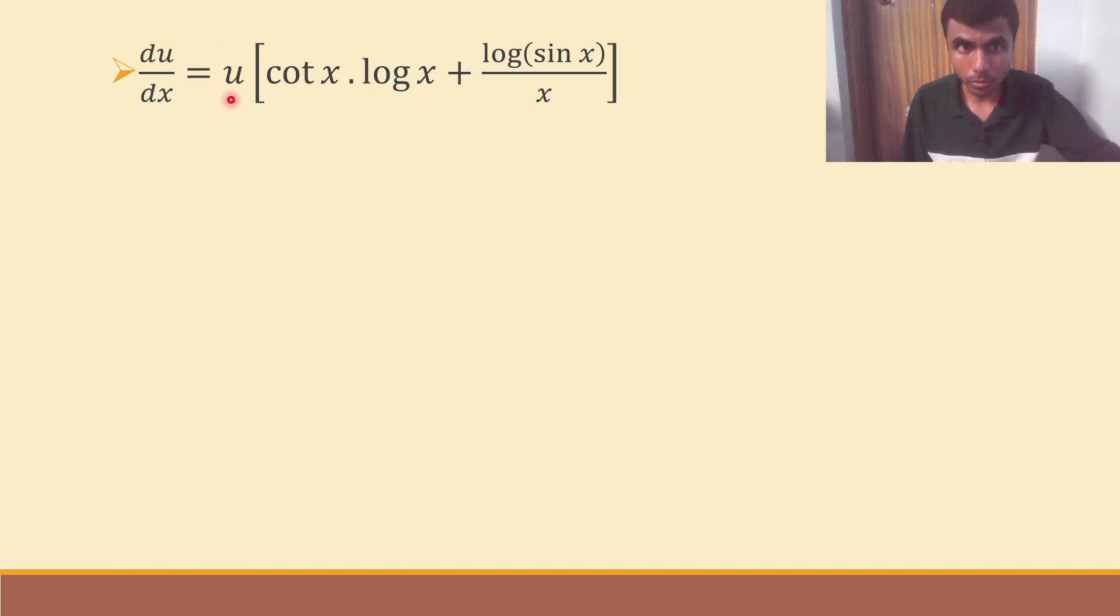So, it would be du by dx is nothing but u into cot x log x plus log of sine x divided by x. Now, what is u? u is nothing but sine x to the power log x. In the beginning, if you remember. Now, mark it as equation 2. We found du by dx.